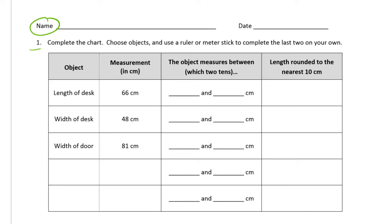So we're looking at the length of a desk and somebody's measured a desk for us. It's 66 centimeters and this is in between which two tens. And I'm sure you probably know this already, but tens are the numbers that we say when we count by tens.